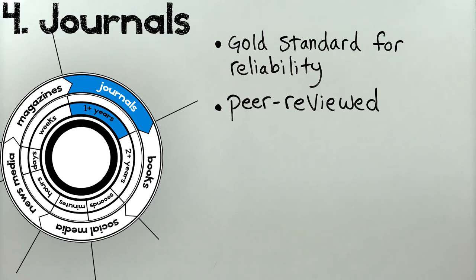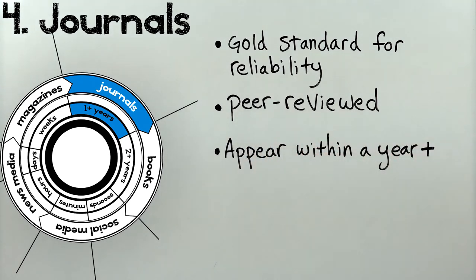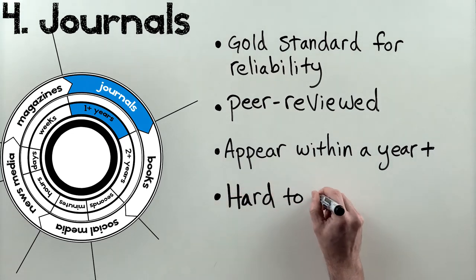Planning a study, collecting and analyzing data, and surviving peer review takes a lot of time, which is why journal articles start to appear a year or so after an event. They're worth the wait, but because of that academic rigor, journal articles can be difficult for non-experts to figure out.